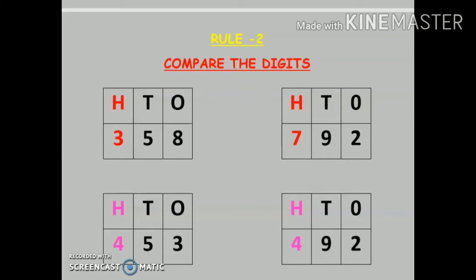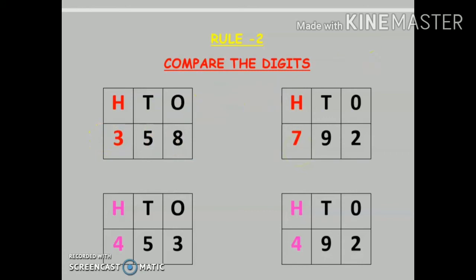We compare the hundreds digits — I have written them in red color. The hundreds digit here is 3, and the hundreds digit here is 7. It's clear that 7 is greater than 3, so the answer is 792 is greater than 358, or we can say that 358 is less than 792.